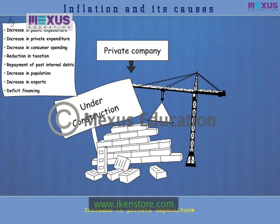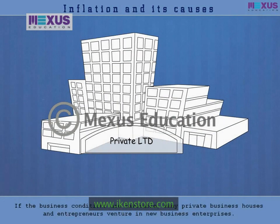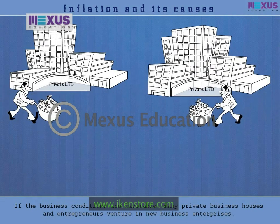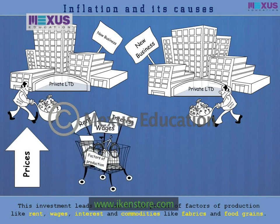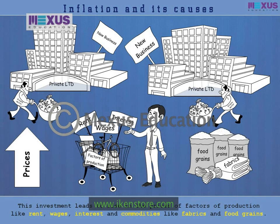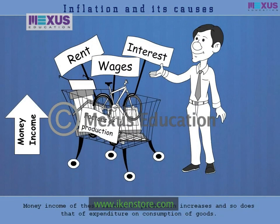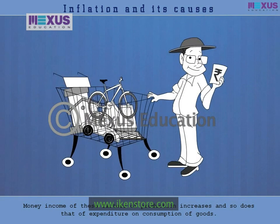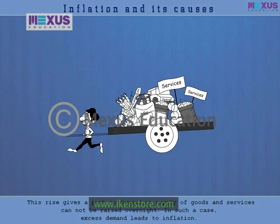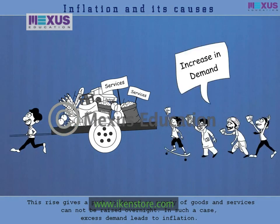Increase in private expenditure: if the business conditions are favorable, many private business houses and entrepreneurs venture into new business enterprises. This investment leads to a rise in the prices of factors of production like rent, wages, interest, and commodities like fabrics and food grains. Therefore, money income of these factors of production increases and so does expenditure on consumption of goods. This rise pushes demand as supply of goods and services cannot be raised overnight. In such a case, excess demand leads to inflation.